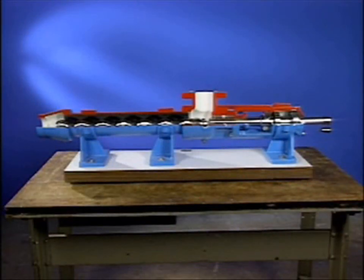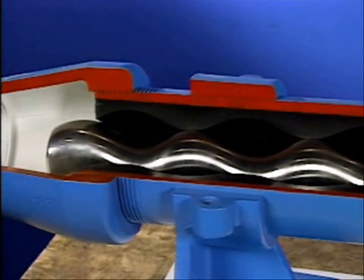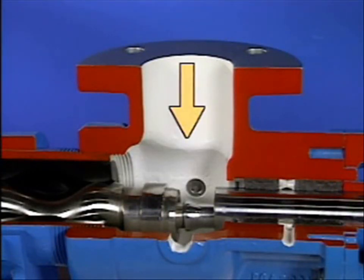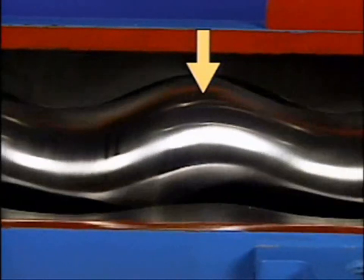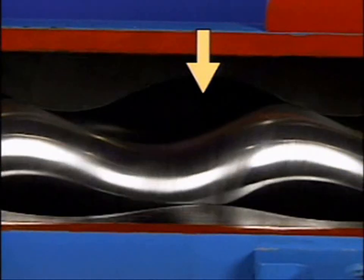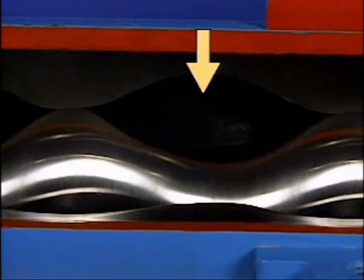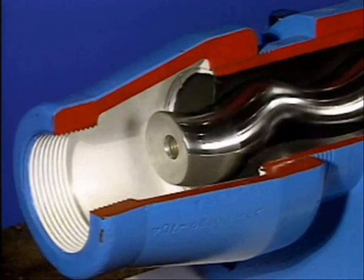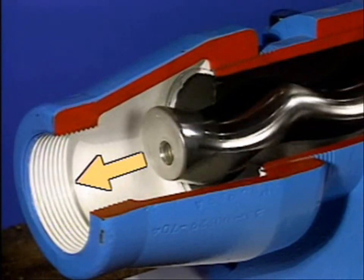This is one type of screw pump called a single screw or progressive cavity pump. It contains a single screw located inside a casing. This end of the screw is normally connected to a driver. As the pump operates, process liquid is drawn into the pump through the suction port. As the screw rotates, cavities form between the casing and the screw. These cavities move or progress toward the discharge of the pump, carrying the process liquid along. When the liquid reaches the discharge, it's forced out of the pump.